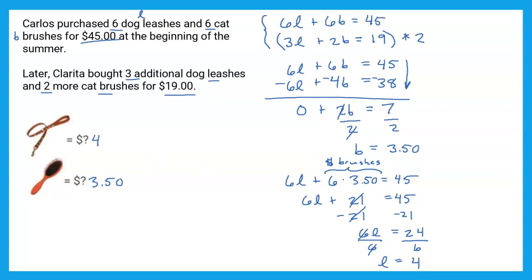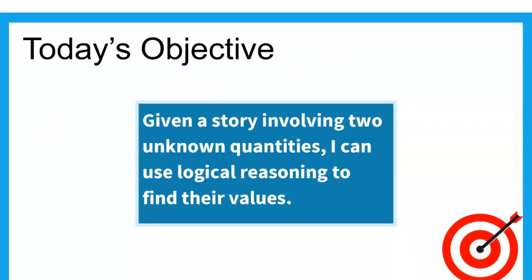You can do this with pictures if that helps it make more sense, but we also figured out a way to do it with equations. That completes everything we were trying to accomplish today. Our objective was: given a story involving two unknown quantities, I can use logical reasoning to find their values. There are more problems on the Jamboard — try to reason them out and figure out how to get it down to just one bag.